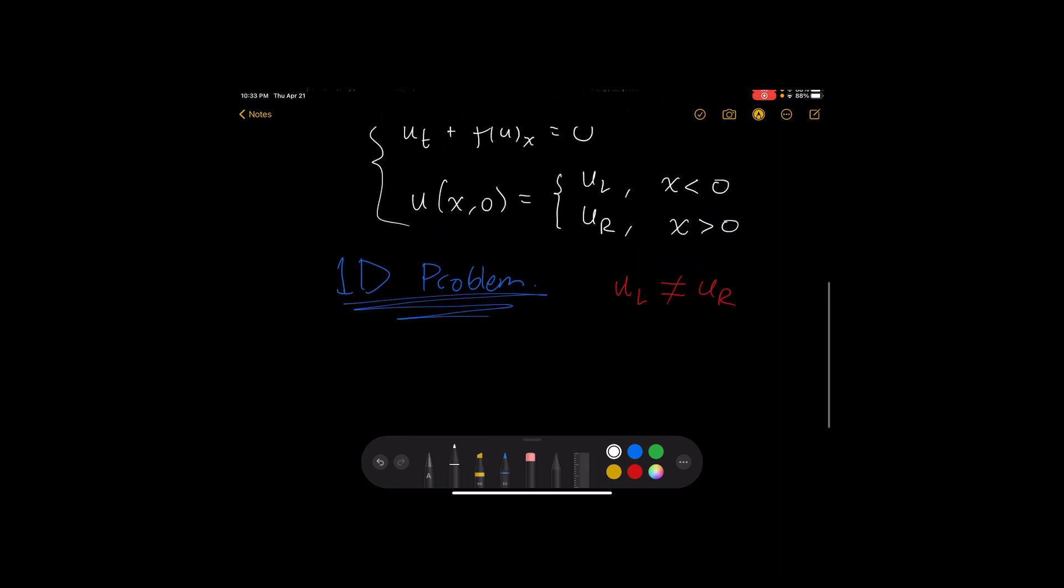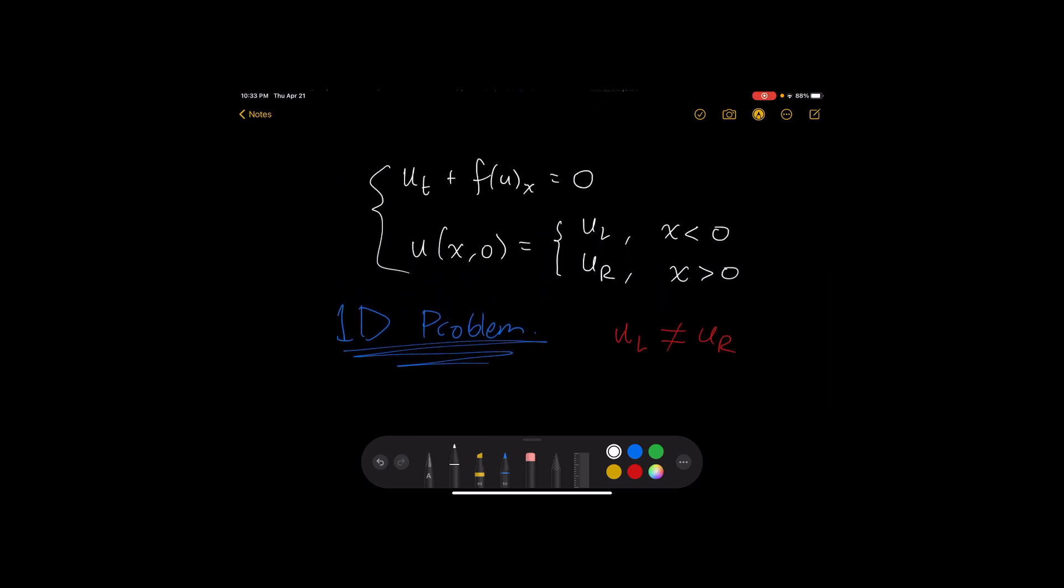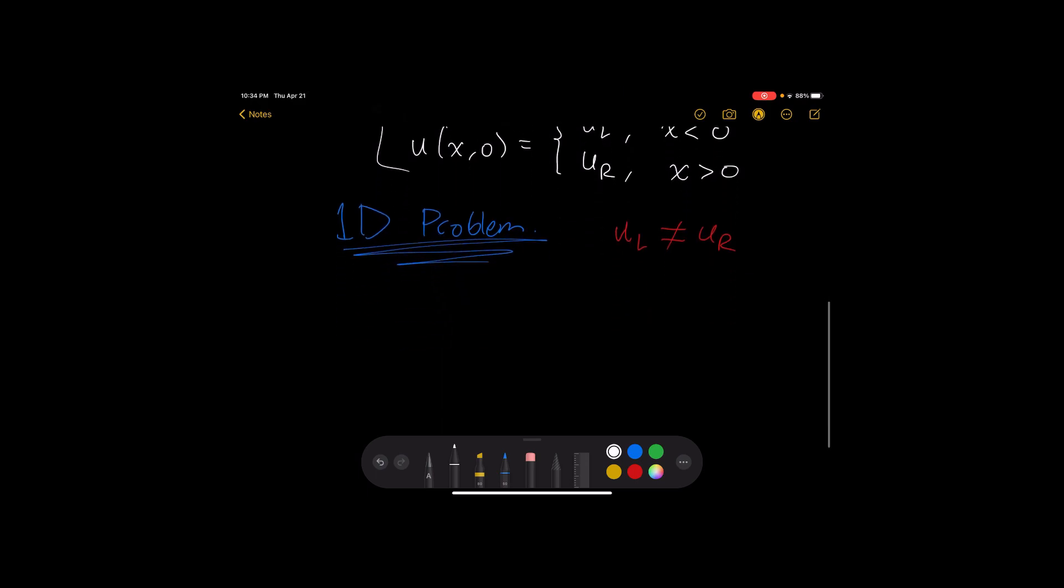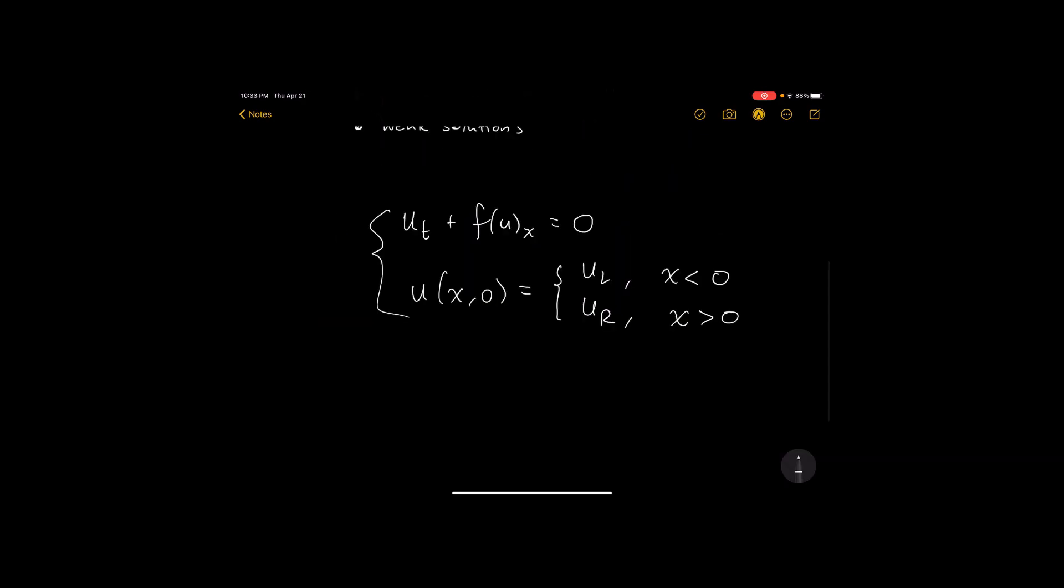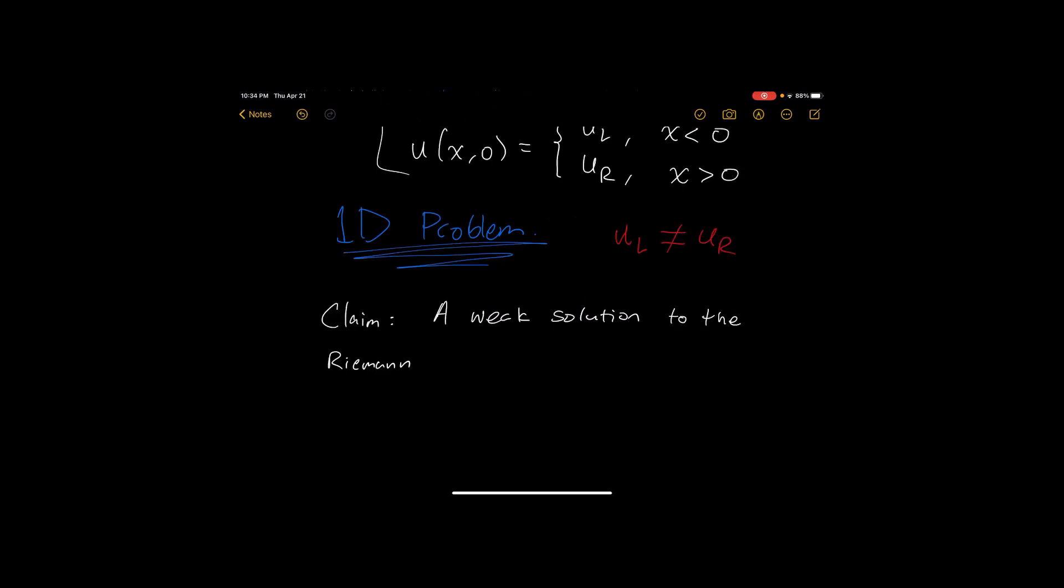So we want to find a solution to this problem. Okay, and I have a claim. So what is my claim? My claim is that the solution, let's say a weak solution to the Riemann problem, is the following.